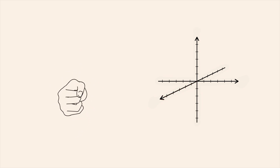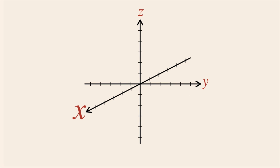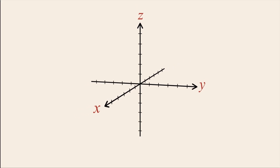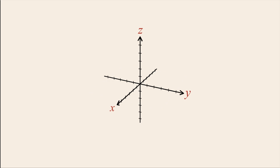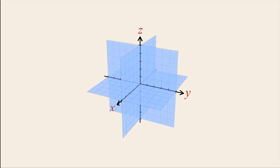Or we could orient the axes with positive x pointing up, positive y pointing out of the page, and positive z pointing to the right. However, the typical orientation is with positive x pointing out, positive y pointing to the right, and positive z pointing up. In three dimensions, just as in two dimensions, the infinite plane containing the x and y-axis is called the xy-plane. Likewise, the y and z-axis create the yz-plane and the x and z-axis create the xz-plane. These three planes divide the Cartesian space into eight regions called octants, which are numbered one through eight and are typically labeled using Roman numerals.